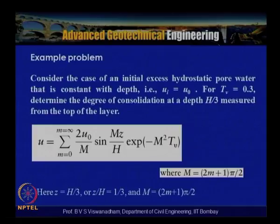Example: For an initial excess pore water pressure that is constant with depth (ui = u₀) and Tv = 0.3, determine the degree of consolidation at depth z = h/3 from the top of the clay layer. Using u = Σ(m=0 to ∞) (2u₀/M) · sin(Mz/h) · exp(−M²Tv), where M = (2m+1)π/2. Here z/h = 1/3 and Tv = 0.3.